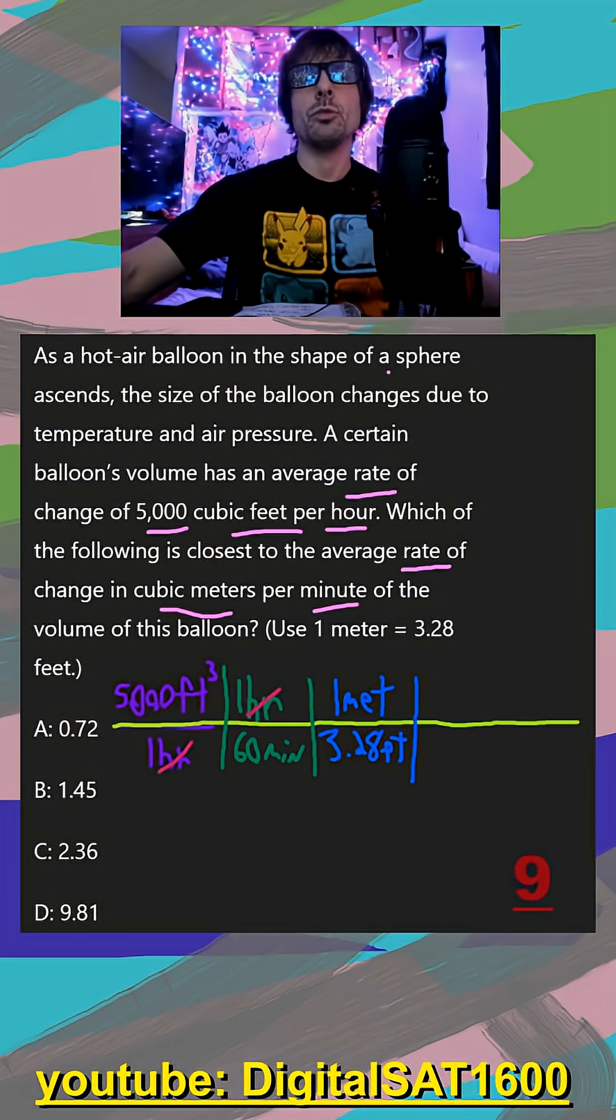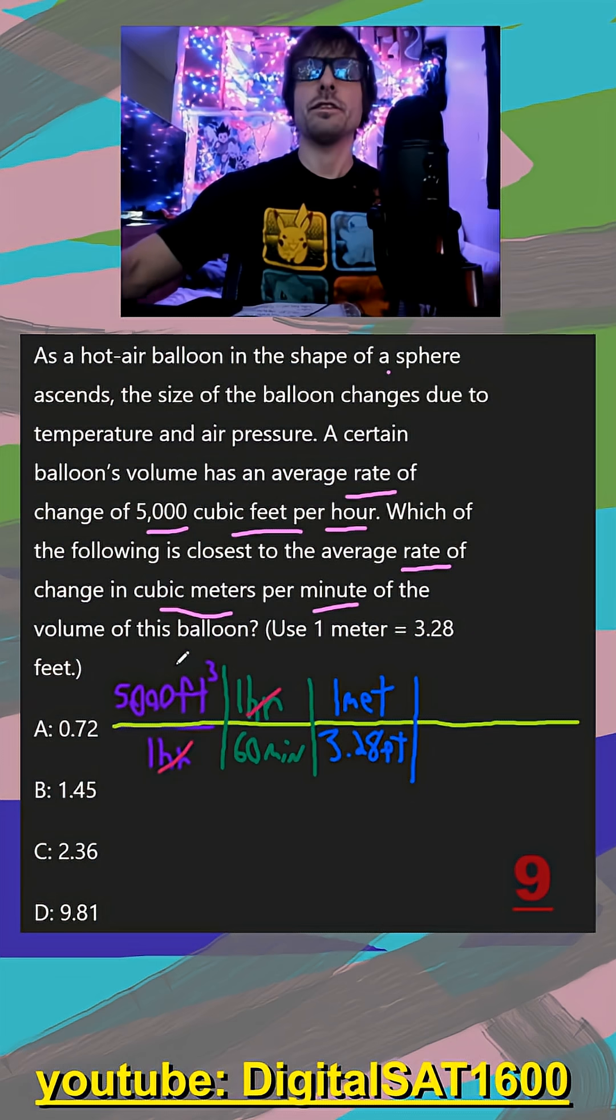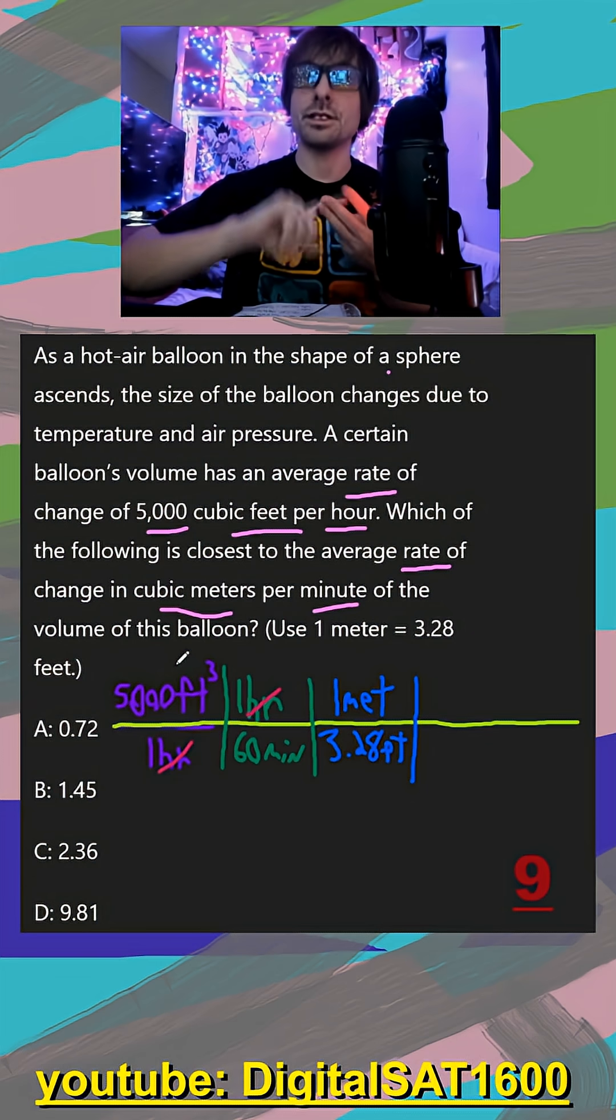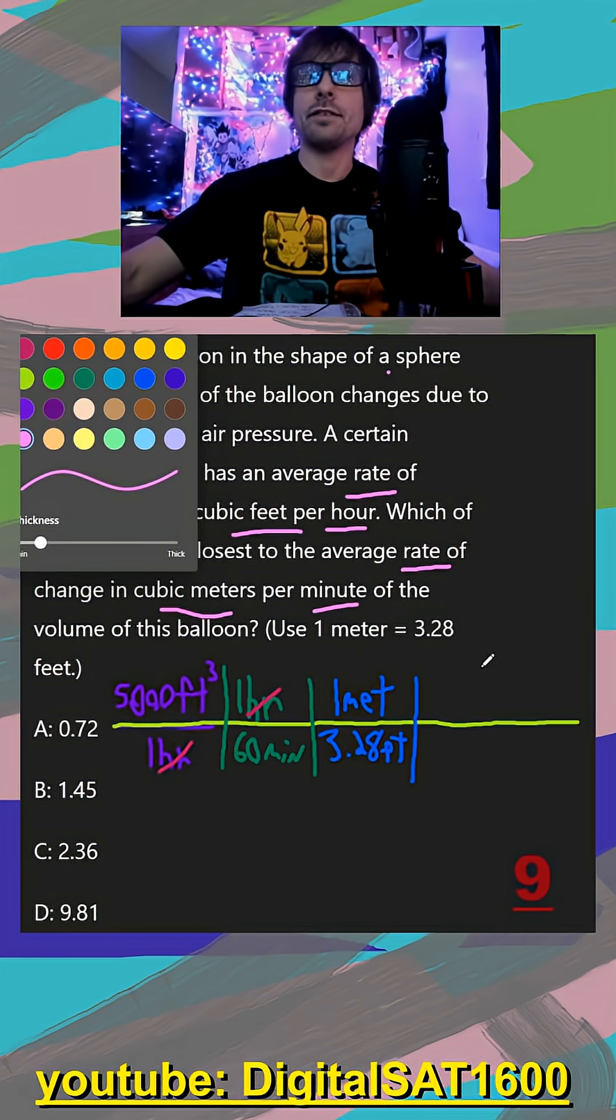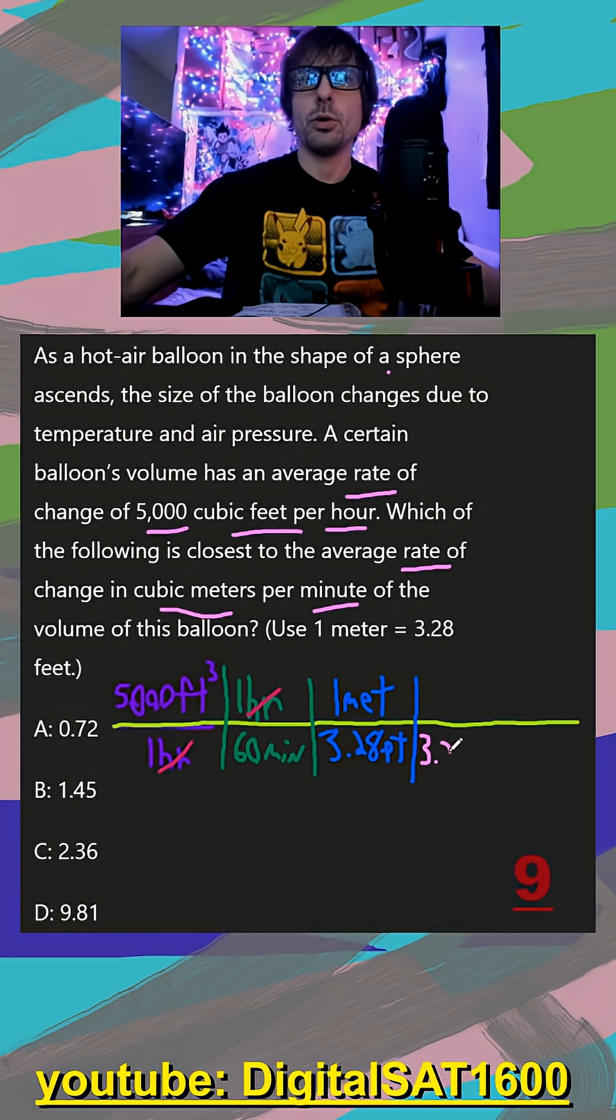The problem is with this, we have feet cubed. So feet cubed is feet times feet times feet. So to cancel out with that, we copy them. So I have to do another one, 3.28 feet is going to be another one meter. And then finally, another 3.28 feet is going to be another one meter.